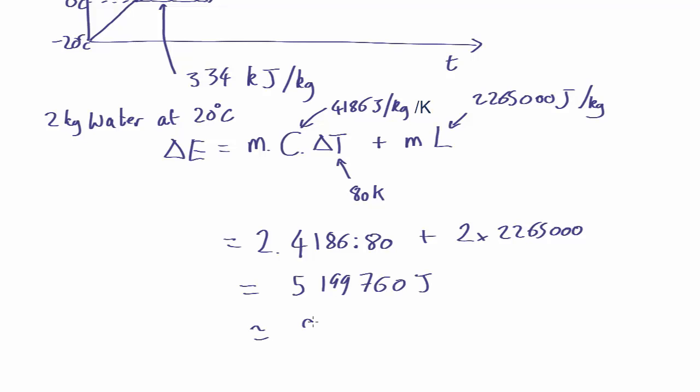So about 5 megajoules. So that's why it takes so long to boil a kettle. It takes to boil it dry, a lot of energy is required.